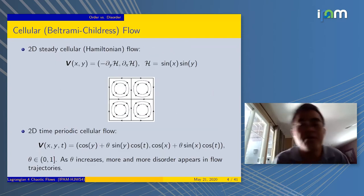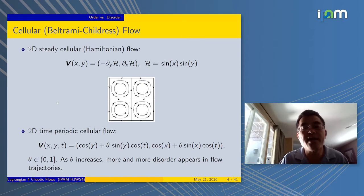Let's start with the flow in two dimensions. This is a so-called cellular flow, or Beltrami-Childress flow. It's a Hamiltonian flow, the Hamiltonian is here. You can visualize the flow on the plane. On the cell 2π by 2π, there were four spinning vortices counter-rotating, and they're steady.